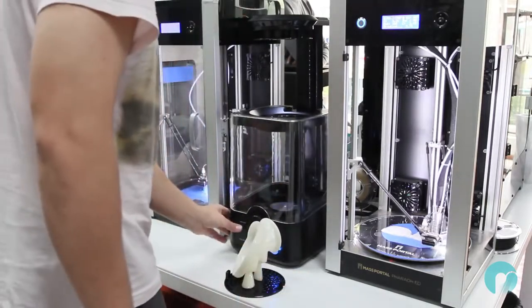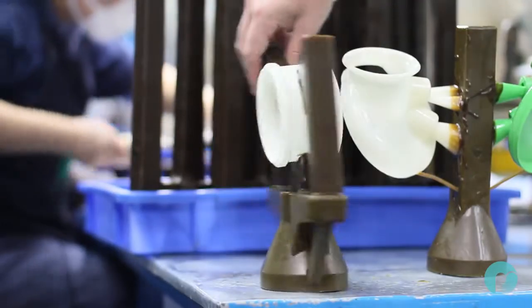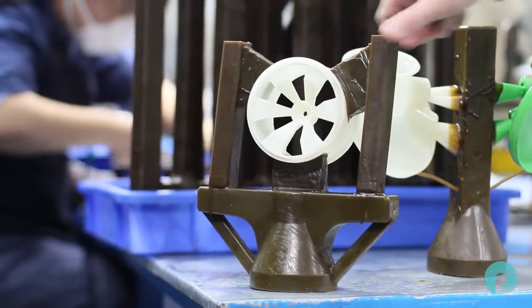Once your parts are printed and polished, we move to the metal casting foundry, to attach the 3D printed parts onto their wax trees to prepare them for molding.